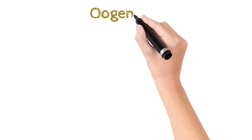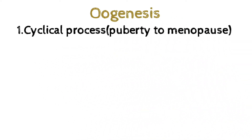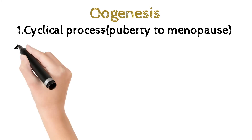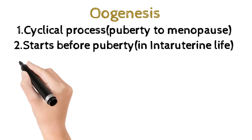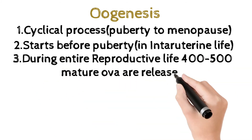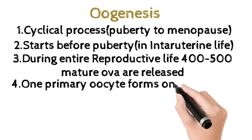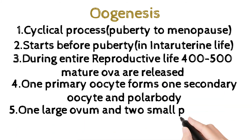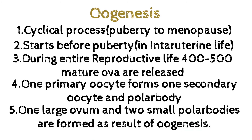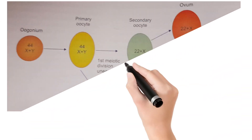Oogenesis is a cyclic process from puberty to menopause; it starts before puberty in intrauterine life. During the entire reproductive life, 400 to 500 mature ova are released. One primary oocyte forms one secondary oocyte and a polar body. One large ovum and two small polar bodies are formed as a result of oogenesis. Have a glance at these pictures.